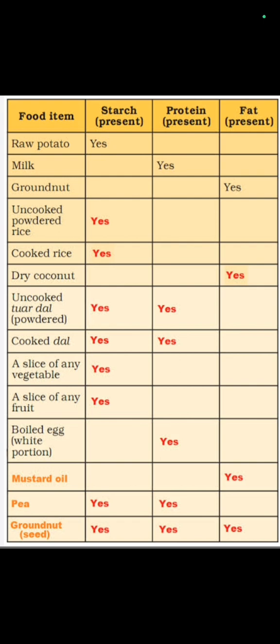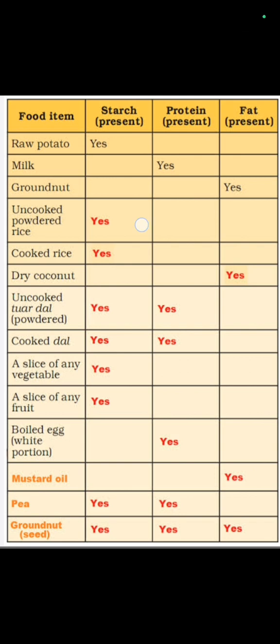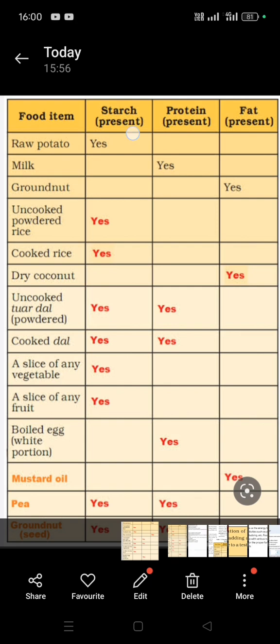Continuing the table: uncooked flour — carbohydrates and protein; cooked flour — carbohydrates and protein; vegetable slice — carbohydrates; boiled egg — protein; mustard oil/soy sauce — fat; peas/chana — carbohydrates and protein; groundnut seeds — starch, protein and fat.